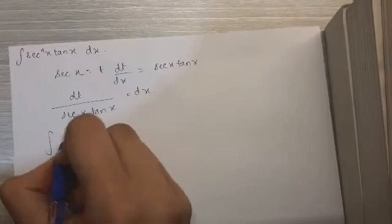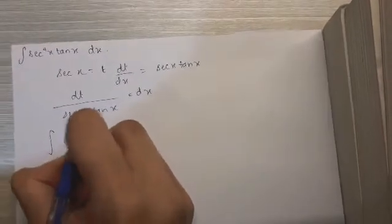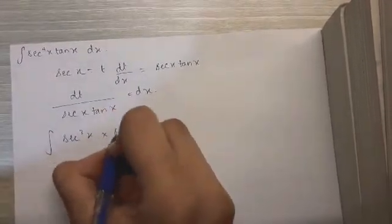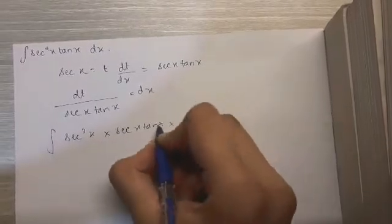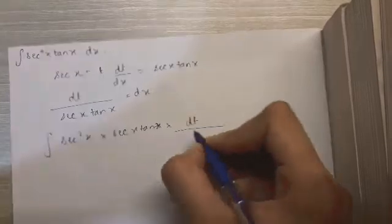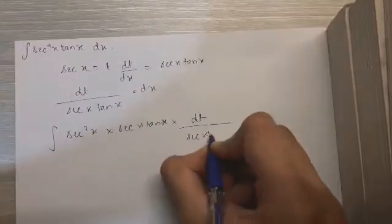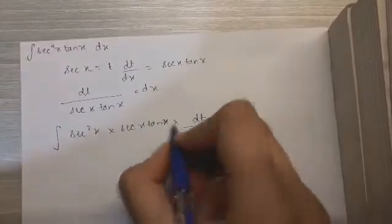So in the integral, I can write sec cube x into sec x tan x. And then that will be multiplied by dt upon sec x tan x, which gets cancelled out.